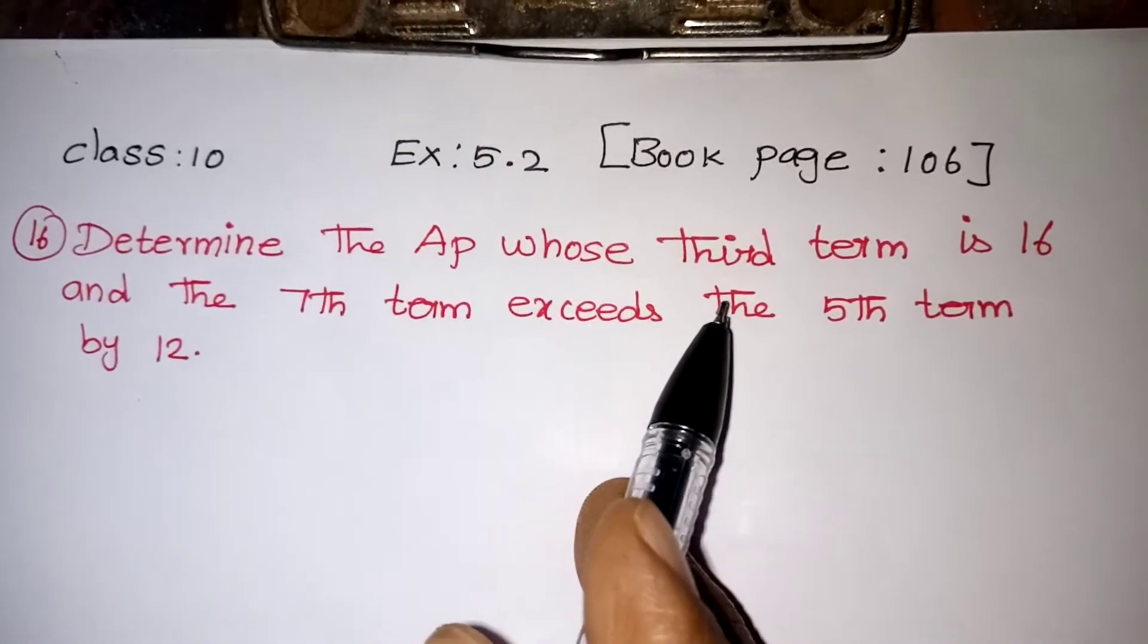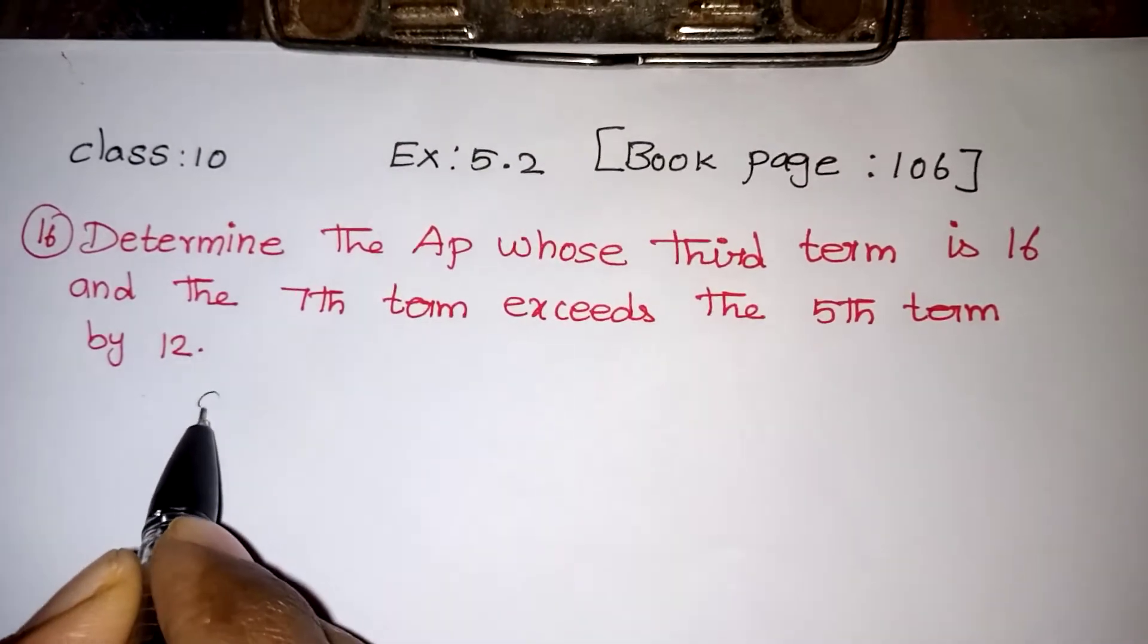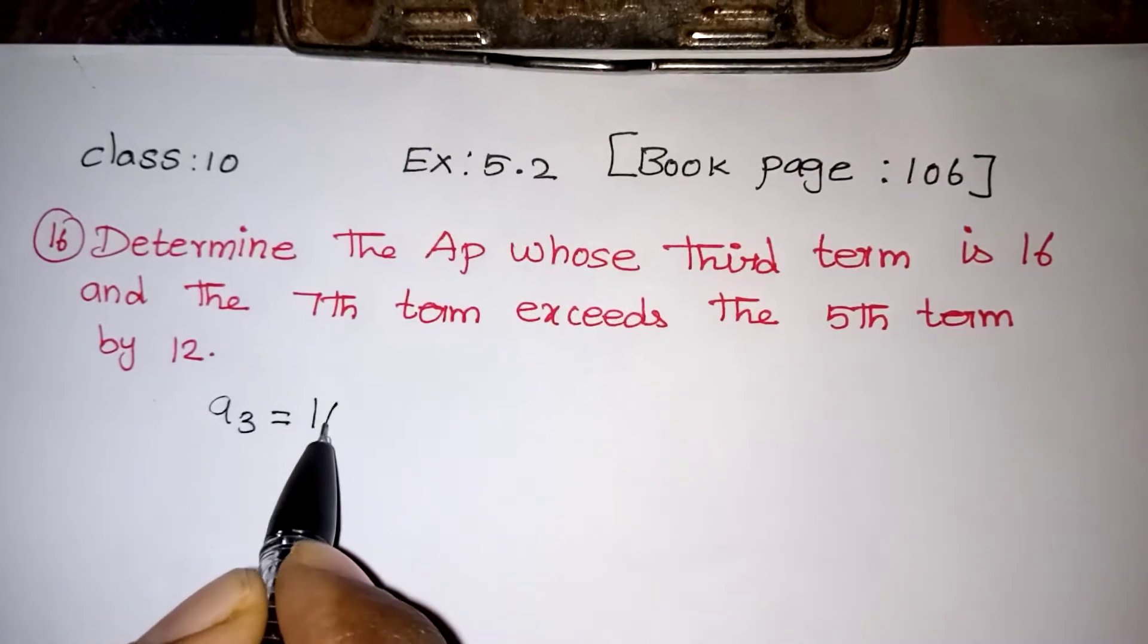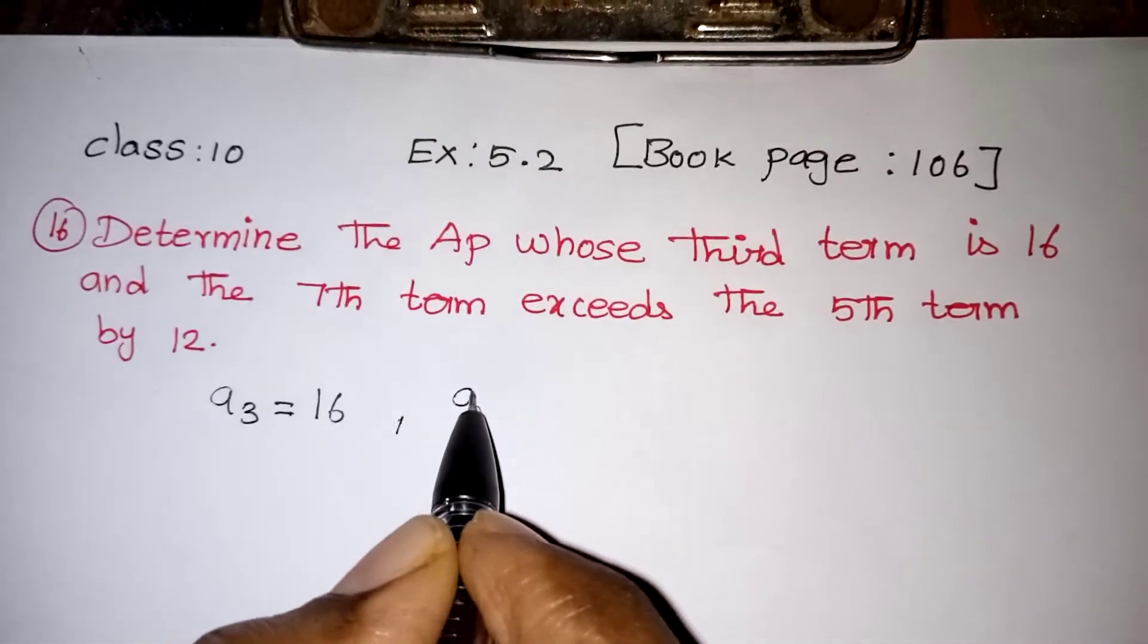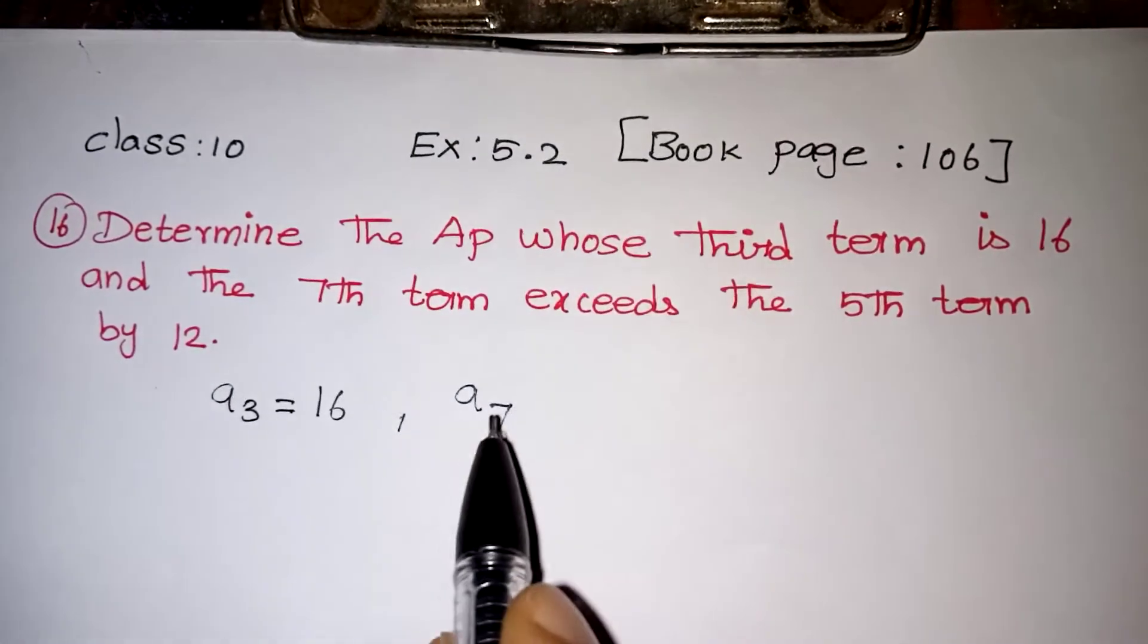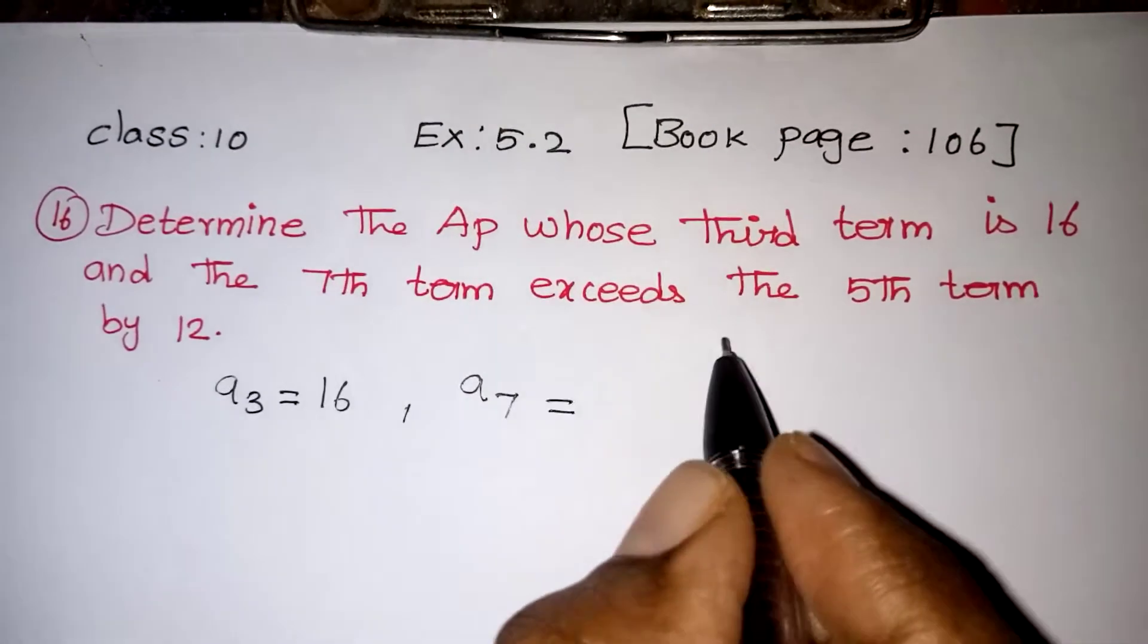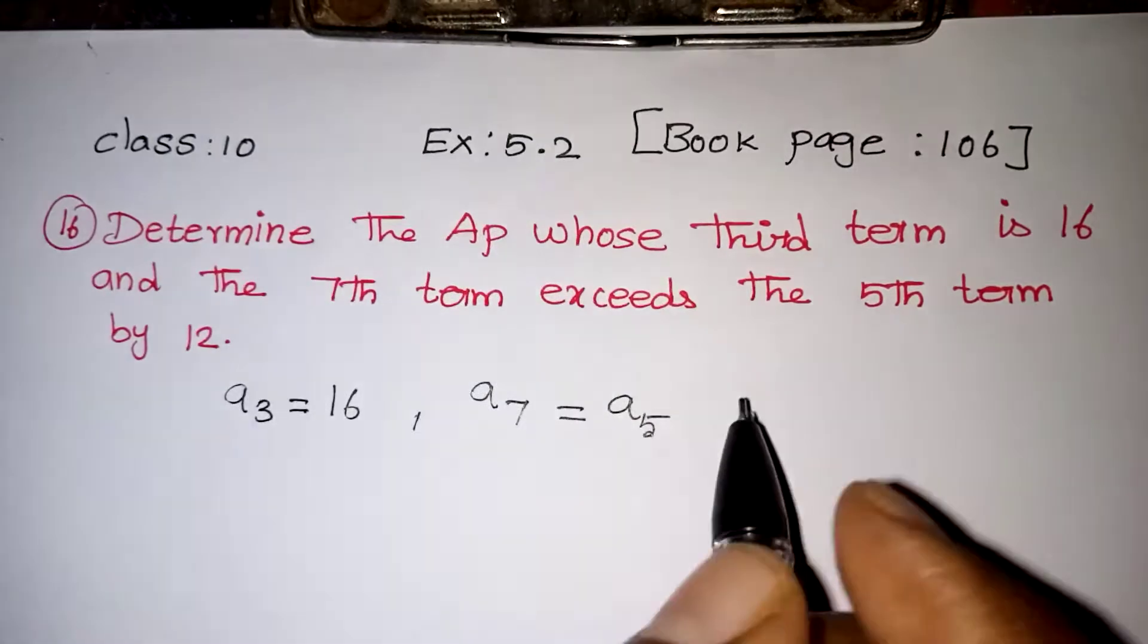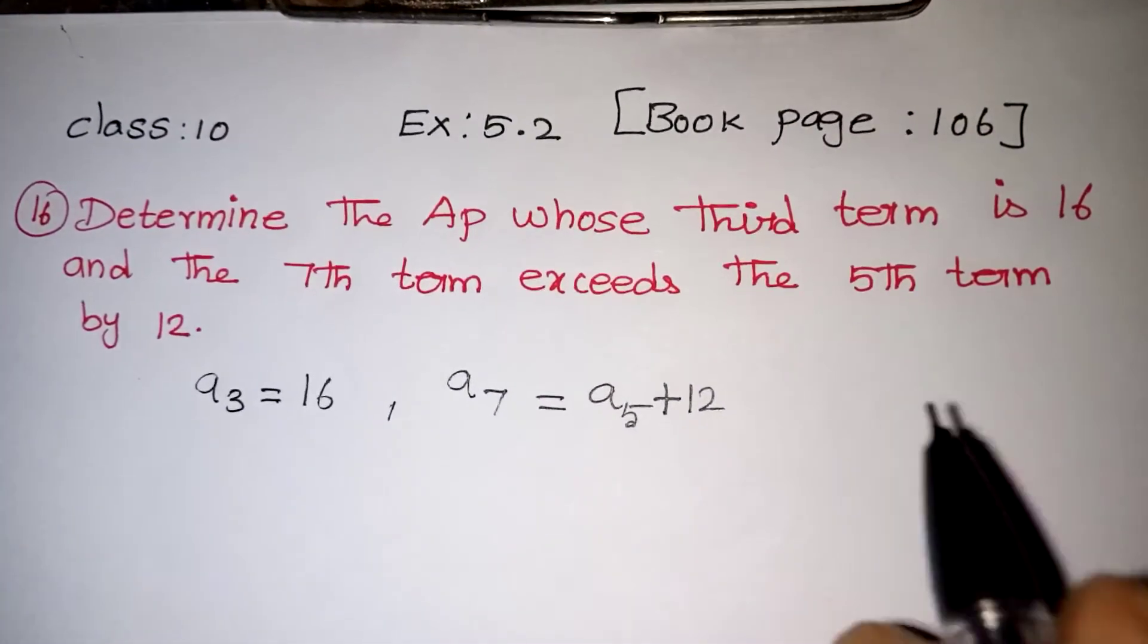Here, whose third term is 16 and the seventh term exceeds the fifth term by 12. Exceed means it is more than - more than 12 you have to take.